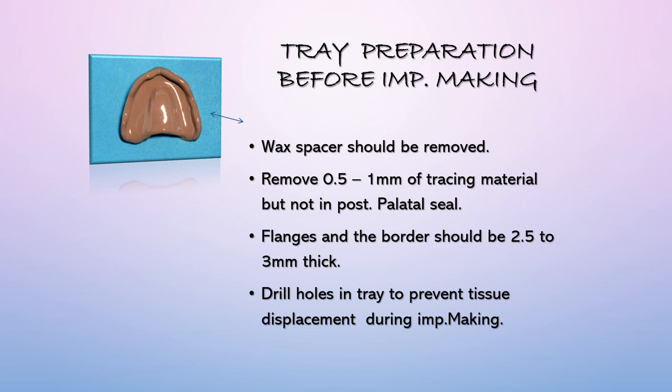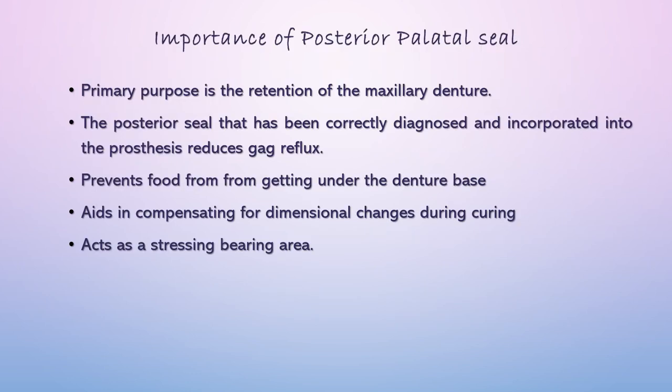Once border molding is completed, prepare the tray for impression making: remove the wax spacer, scrape off 0.5 to 1 mm of the green stick compound from the borders, drill escape holes in the custom tray for excess impression material to escape, and ensure the green stick compound is a minimum of 2.5 to 3 mm thick before making the final impression.